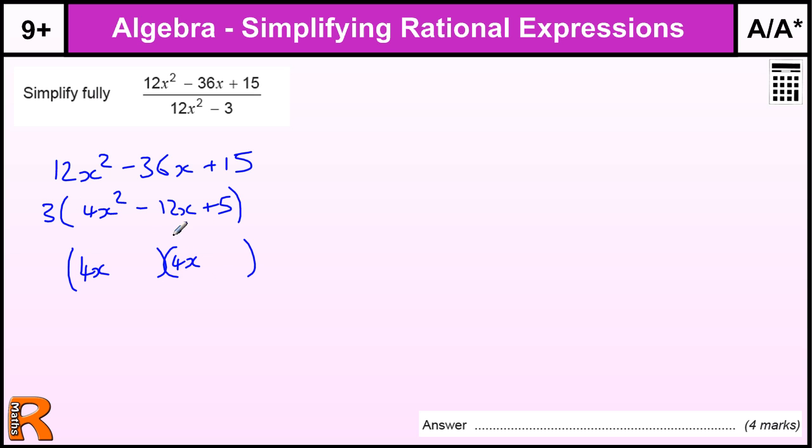and then you take that 4 and you times this number by 4 to get 20, and you think about what multiplies to give you 20, but then will add to give you minus 12. And plus 20 and minus 12, they've got to be both negatives. And that's going to be 10 and 2. It doesn't matter which bracket you put them in because they're both 4x's.